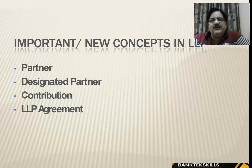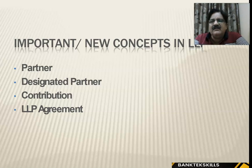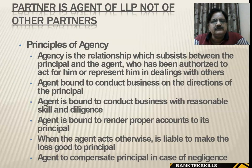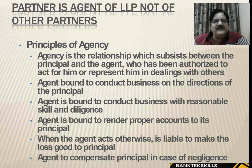Key concepts in LLP: partner, designated partner, contribution, and the LLP agreement. Designated partners are those who see that the legal formalities are completed before the LLP is formed — they are responsible and accountable for completing these formalities. A partner is an agent of the LLP, not of other partners, so liability is several, not joint and several.